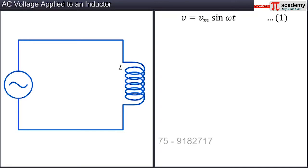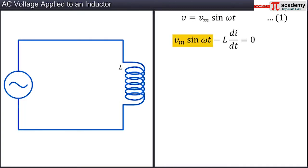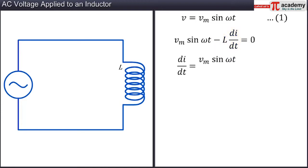Applying Kirchhoff's Law to the purely inductive circuit, we get Vm sine omega t minus L di by dt equal to zero. Here, Vm sine omega t represents the potential difference applied across the circuit, and the term L di by dt represents the self-induced EMF in the inductor. Thus, we get dI by dt to be equal to Vm by L sine omega t. Let this be equation 2.